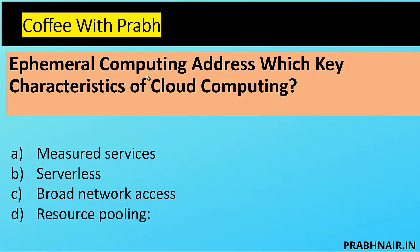The first coffee shot: ephemeral computing addresses which key characteristics of cloud computing? Ephemeral computing was part of the new syllabus of CCSP. Ephemeral means lasting for a very short time. Ephemeral computing refers to resources that are created when needed and immediately deprovisioned when no longer needed. For example, if I'm using a 2 GB instance and want to upgrade to 4 GB, I can use ephemeral computing, upgrade, work, and when not in use, deprovision.